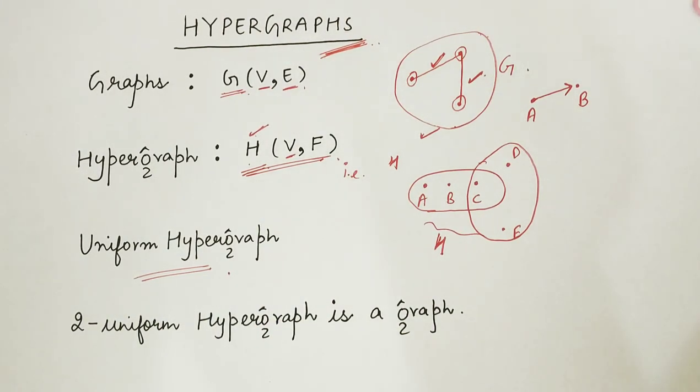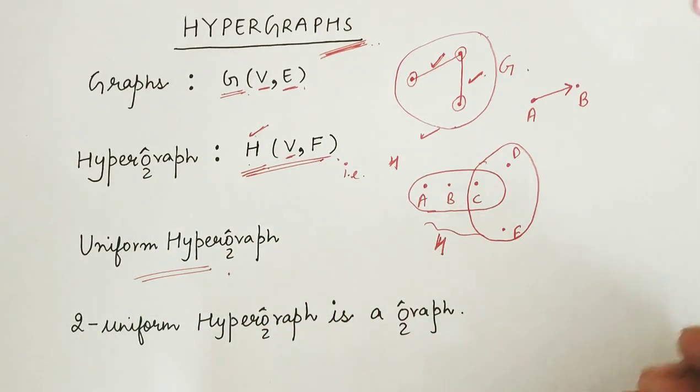A hypergraph such that all its hyperedges have size K, we call it as K-uniform hypergraph.